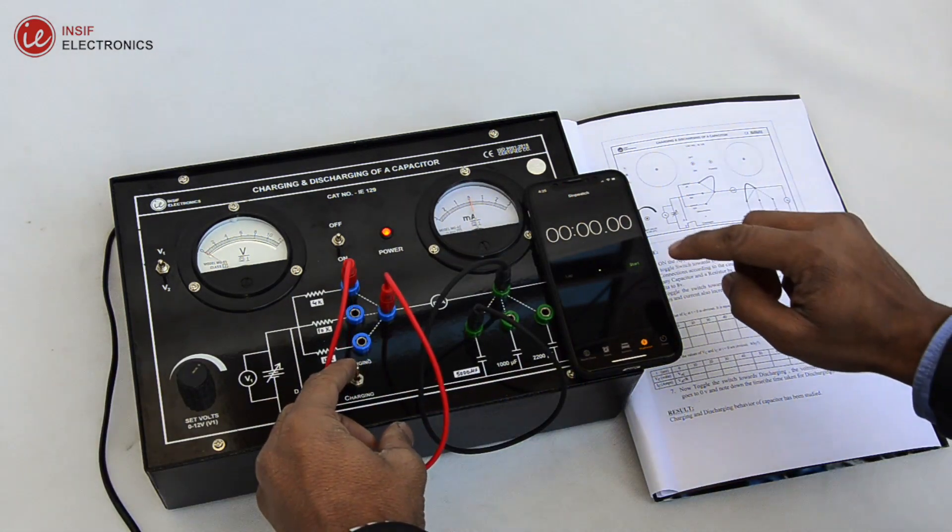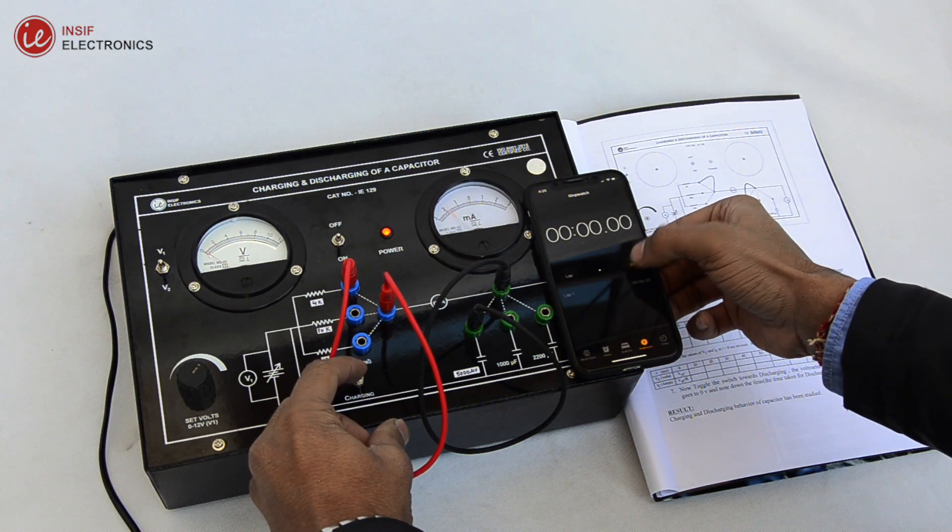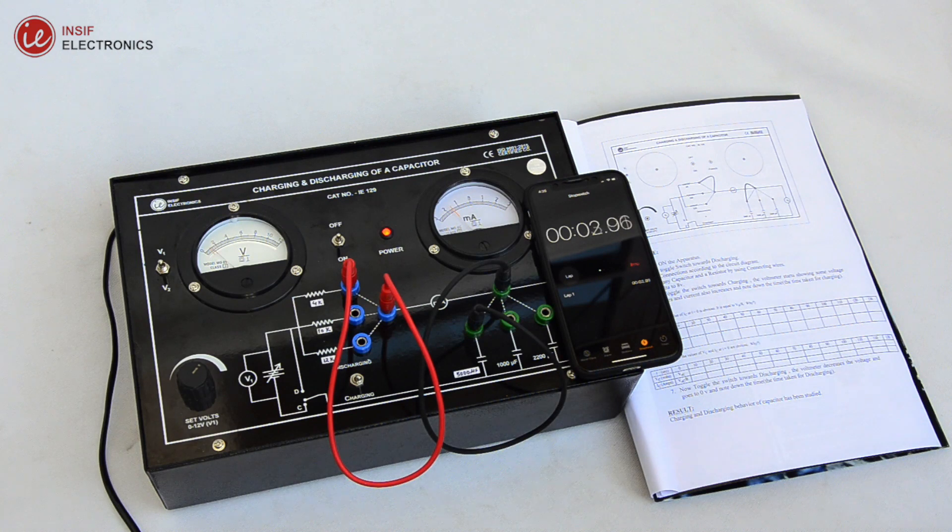Now simultaneously, set the toggle switch to charging and start the stopwatch and note down the voltages at 10 seconds, 20 seconds, 30 seconds and so on, till the capacitor is fully charged.